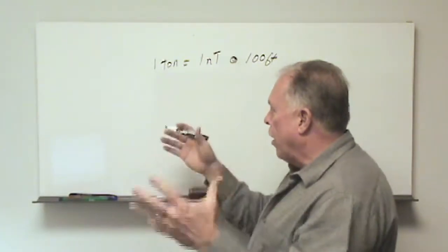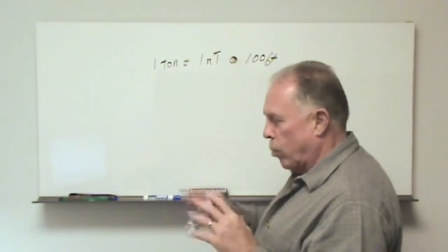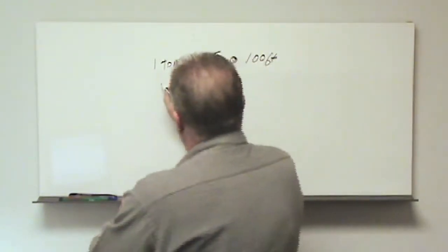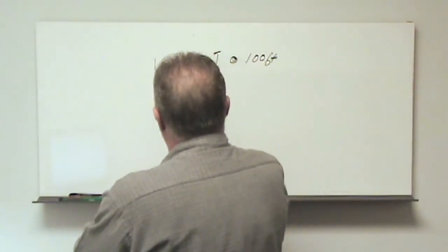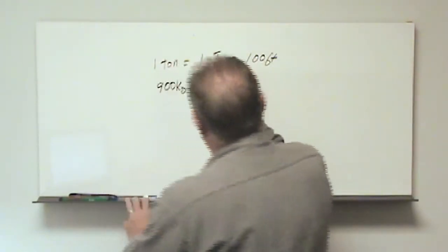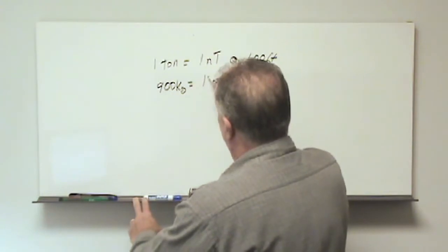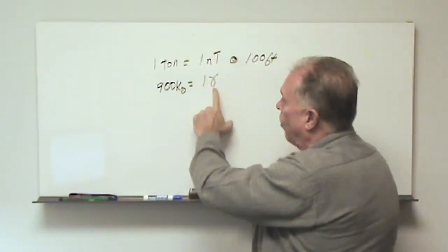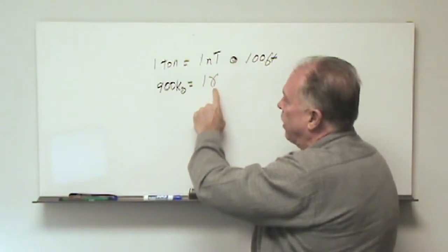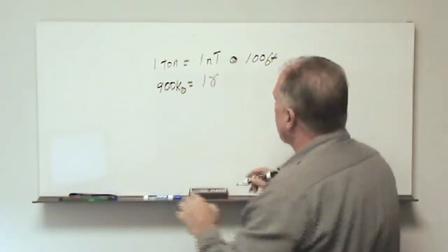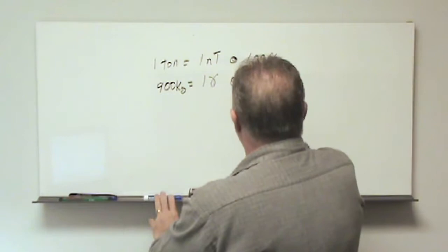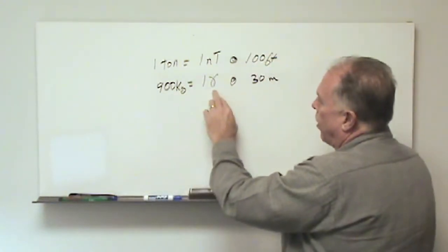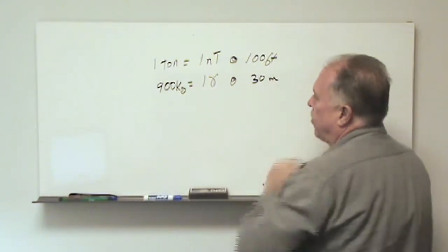In the interest of being worldwide with our discussion here, I want to say that one ton is equal to approximately 900 kg, and besides a nanotesla we can also use the terminology gamma. This is an older term but one that's still used; it's equal to a nanotesla, and of course 100 feet would be 30 meters. So 900 kg, one gamma or nanotesla at 30 meters.